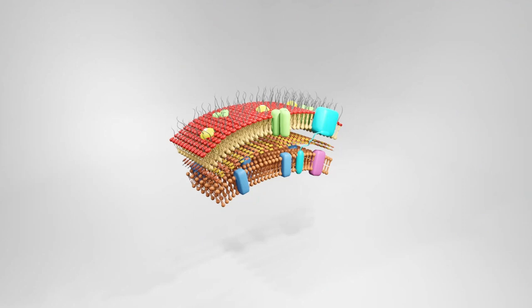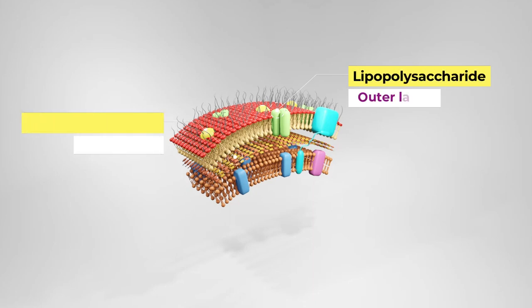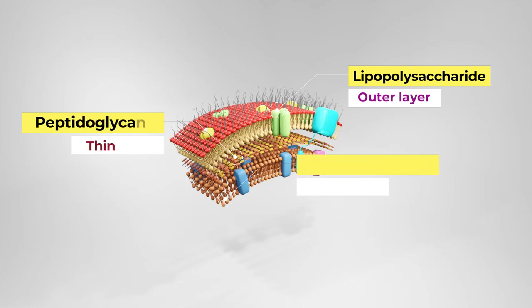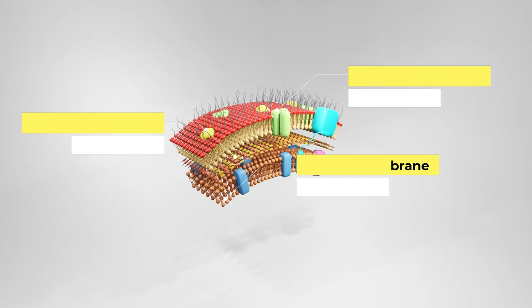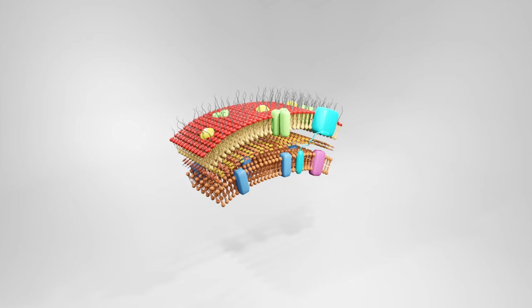This is the interactive model of the gram-negative bacterial cell wall. We can see the outermost layer as the lipopolysaccharide, the inside layer as the peptidoglycan, and the innermost layer as the plasma membrane. The plasma membrane is only placed in this 3D model to present the periplasmic space — the space between the peptidoglycan and the plasma membrane. As already stated, the plasma membrane is not a component of the bacterial cell wall.